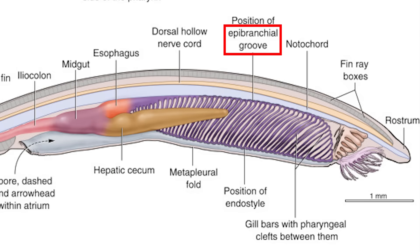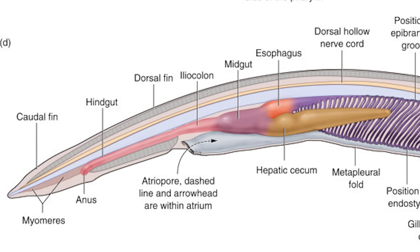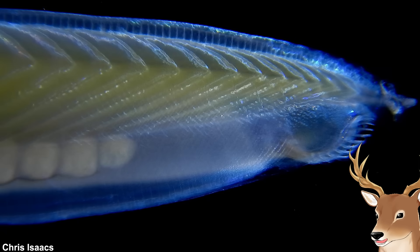This mucus net pushes towards the pharyngeal slits and traps food particles in the water, which are then collected in the dorsal groove of the pharynx called the epipharyngeal groove, or epibranchial groove. This groove is ciliated, and the cilia push the food particles into their digestive tract. Water is collected in the atrium and exits through the atriopore, while food waste is excreted through the anus. As for respiration, they don't have a specialized respiratory system — they just breathe through their skin.